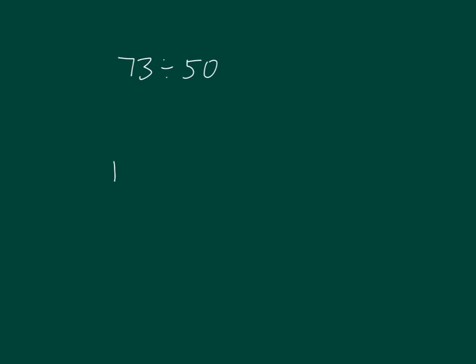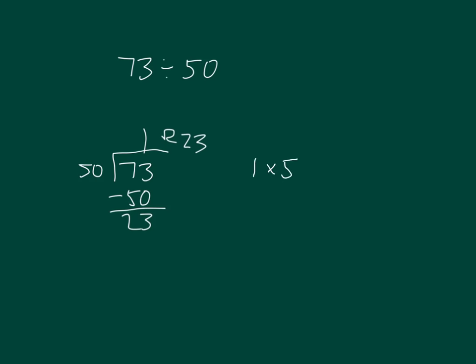Here's another problem: 73 divided by 50. How many times does 50 go into 73? Did you say once? Because 1 times 50 is 50, and 73 minus 50 is 23. Our remainder is 23. 73 divided by 50 is equal to 1 remainder 23. We can run a check: 1 times 50 is 50, plus 23, does give us 73.